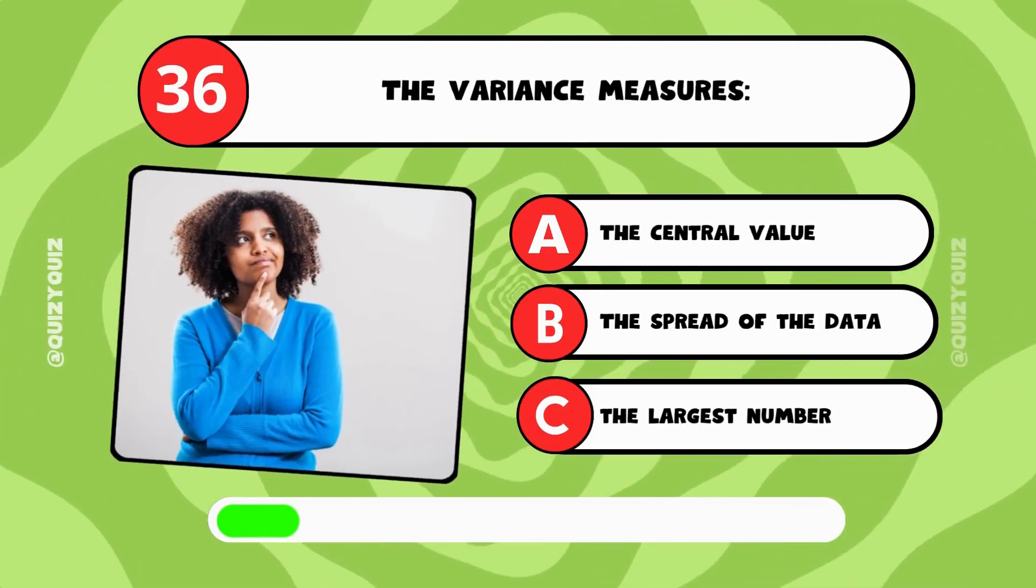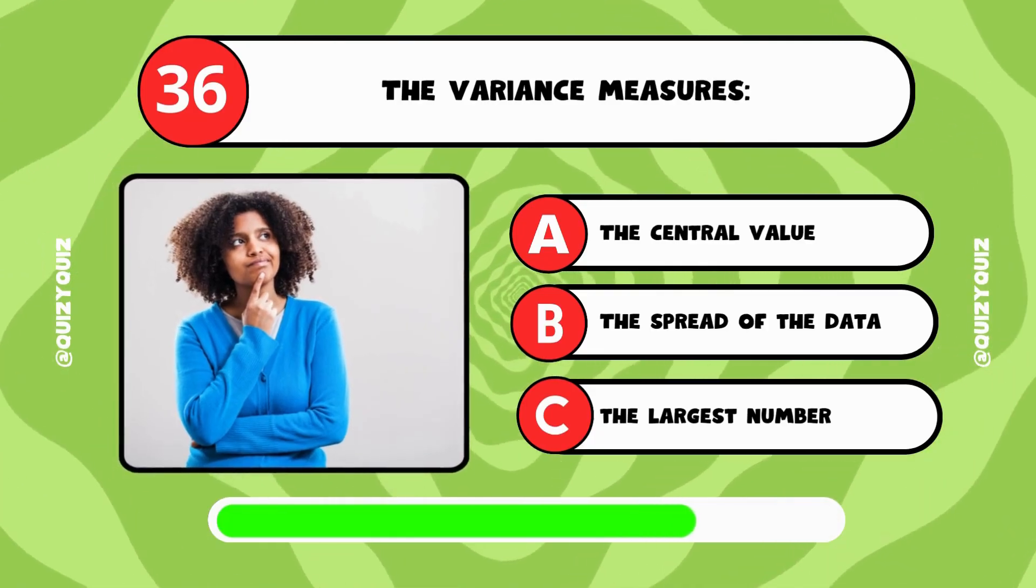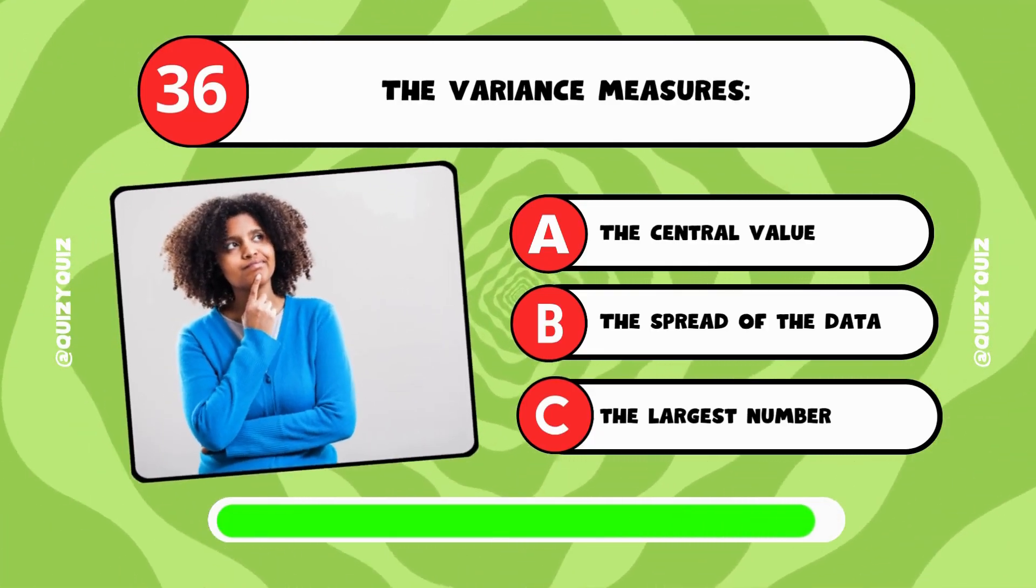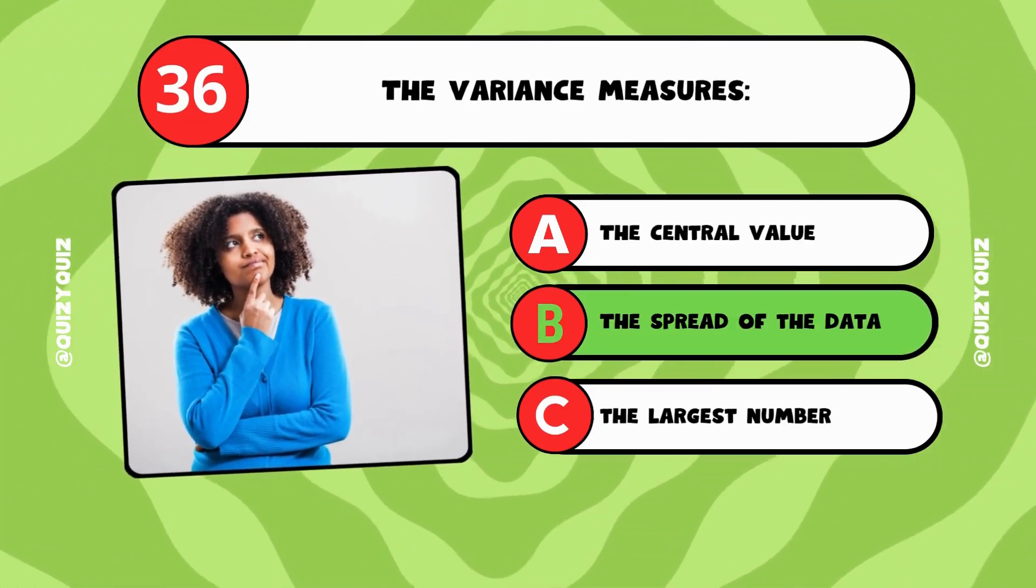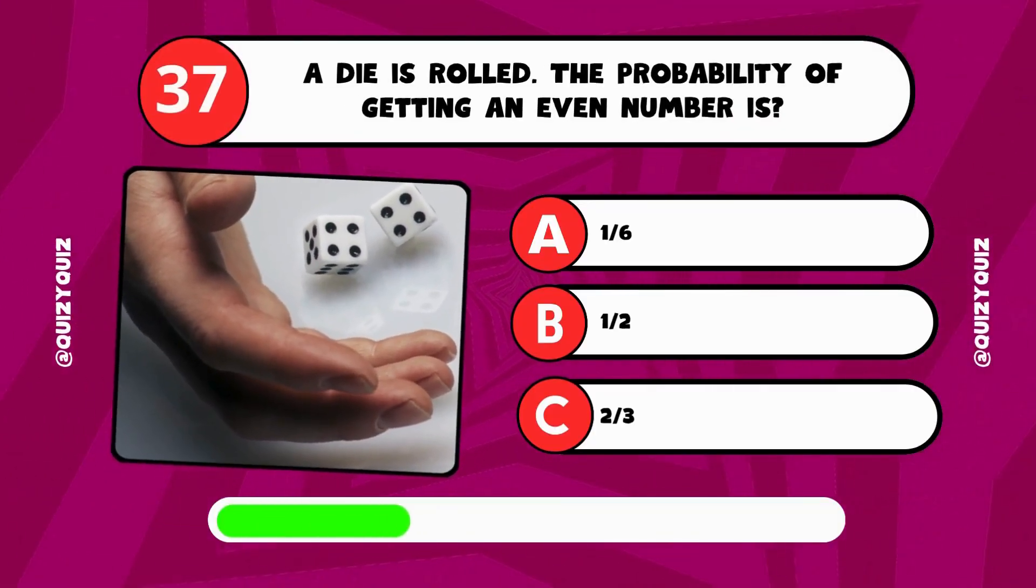The variance measures, the central value, the spread of the data or the largest number. A die is rolled. The probability of getting an even number is